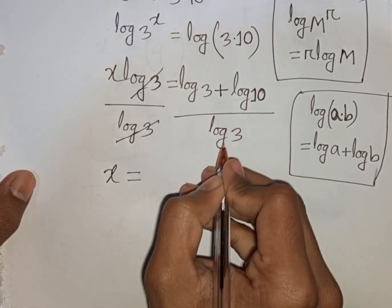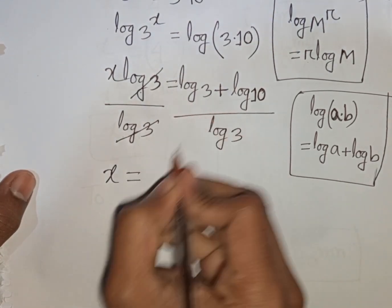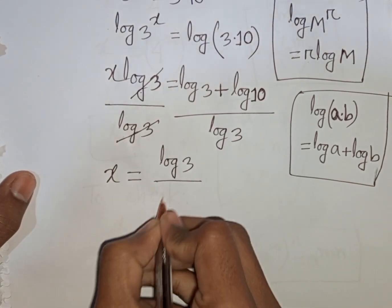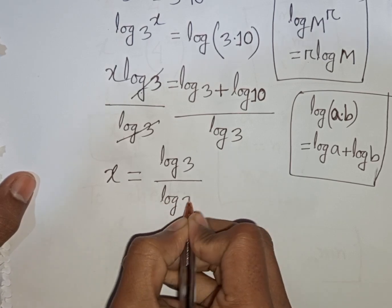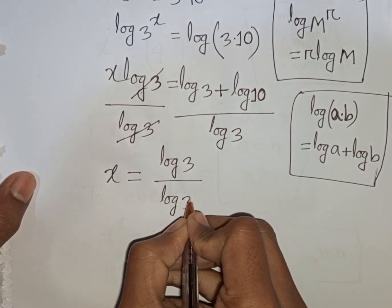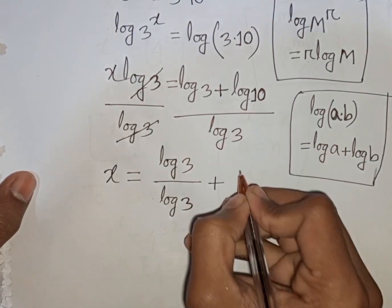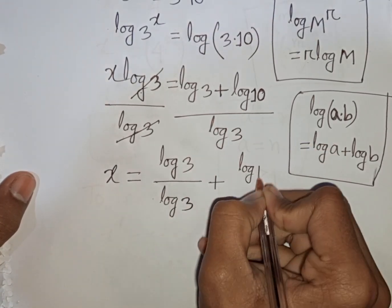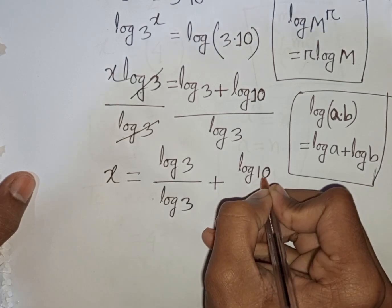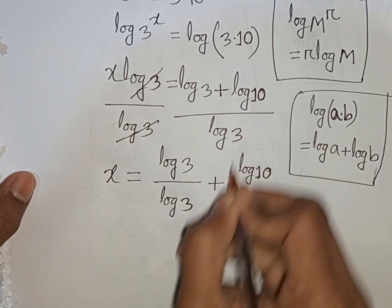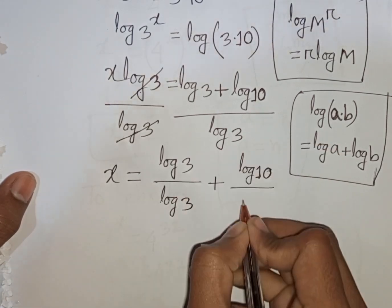Now we see this log 3, this log 3 will be cancelled. So here x will be equal to this divided by this, that means it will be log 3 over log 3 plus log 10 over log 3.